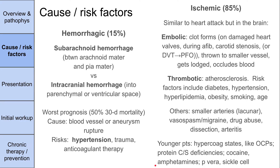The next big category is hemorrhagic stroke, which is 15% of all strokes. The two broad categories are subarachnoid hemorrhage and intracranial hemorrhage. These have the worst prognosis — 30-day mortality is between 30 and 50%, much higher than ischemic strokes. The cause is a blood vessel or aneurysm rupture; often berry aneurysms rupture, usually triggered by hypertension. Other risks include trauma and anticoagulation.